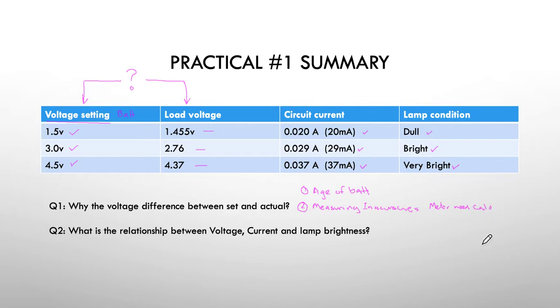The next question is what is the relationship between voltage, current, and lamp brightness? Well the relationship's reasonably obvious. As we increased the voltage, the voltage went up, you would have noticed the current also went up, and the brightness went up. So there's a direct relationship. As long as the resistance in the circuit remains constant, if we increase the voltage, the current will go up in proportion. And in our case the brightness of the lamp will increase. And of course if I keep increasing the voltage and therefore the current, eventually the light will get so bright that it will actually melt the element and fail.